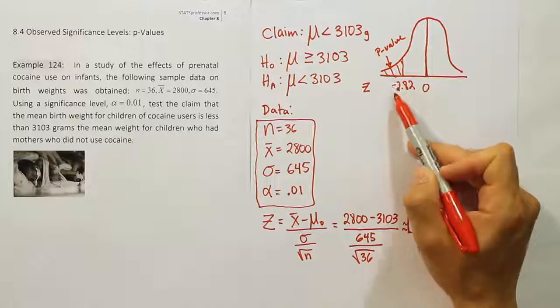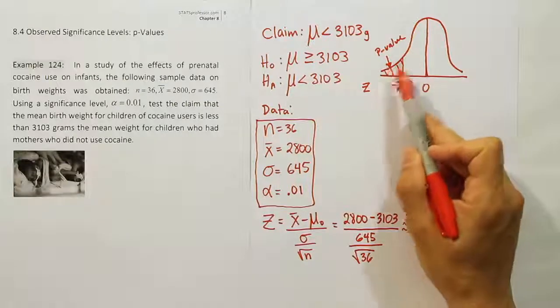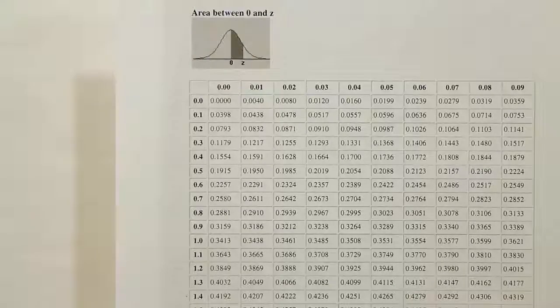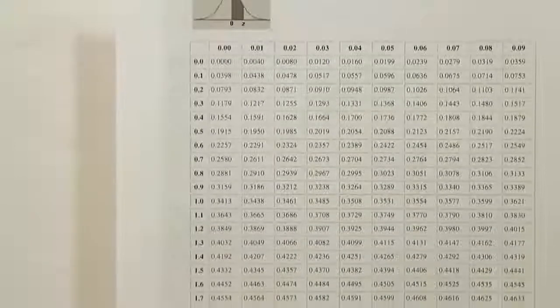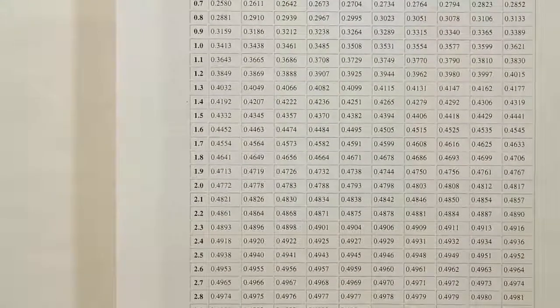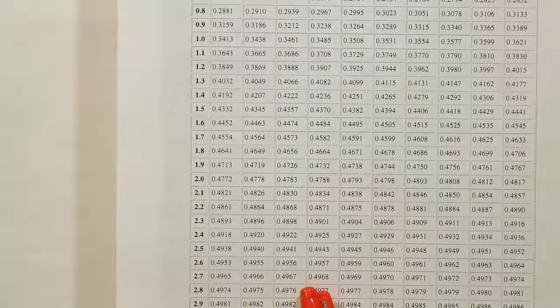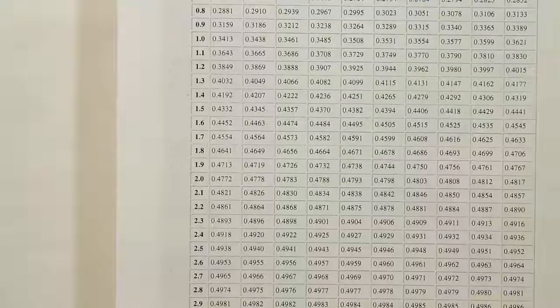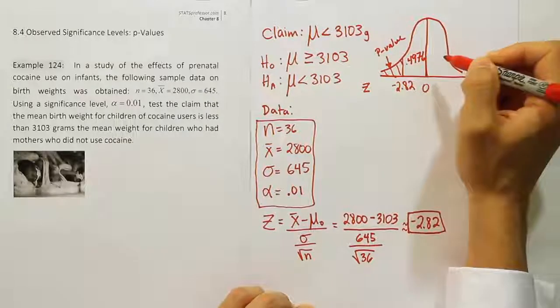The p-value is equal to that area. So I need to figure out what the area is. To do that, I'm going to go to the z-chart. I'm going to look up negative 2.82. It's going to give me the area from here to here. So we're looking at the value 2.82. We're going to come down in the left-most column until we see something near 2.8. There's 2.8. And then if we go over 0.02, the value is 0.4976.